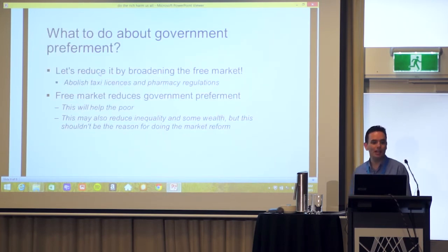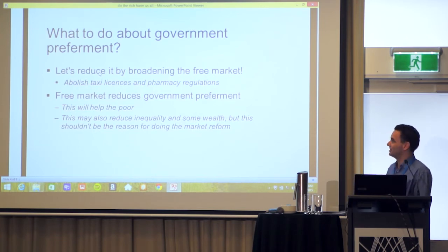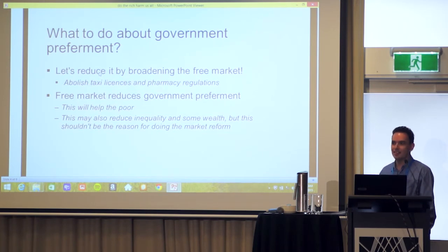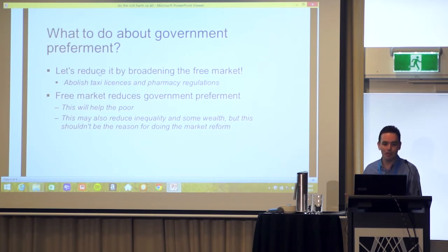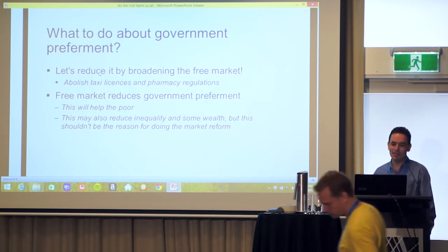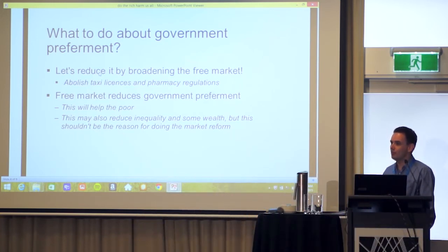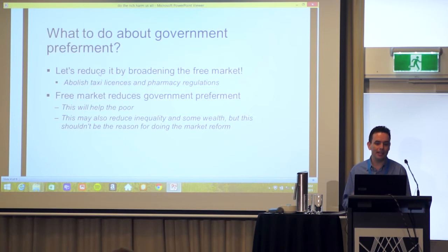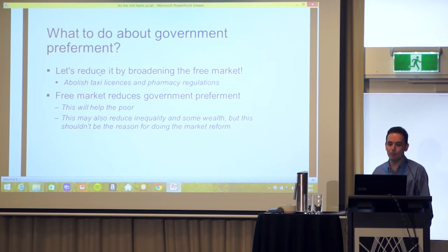What should we do about government preferment? It's actually not too difficult — let's reduce it by broadening the free market. For example, we can abolish taxi licences and the pharmacy ownership and location regulations. The free market reduces government preferment, and this will help the poor. It may also reduce inequality in wealth, but very importantly, this is not the aim of doing it.